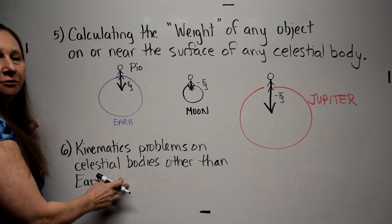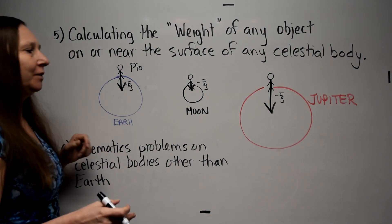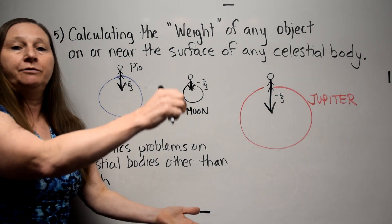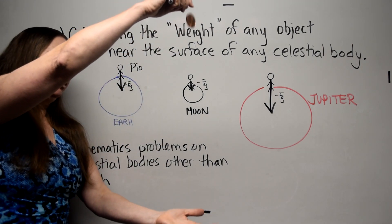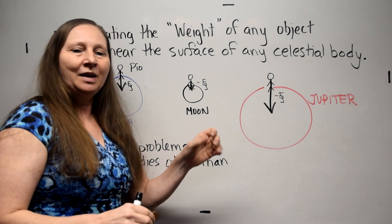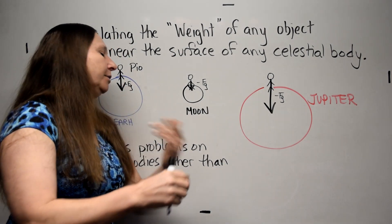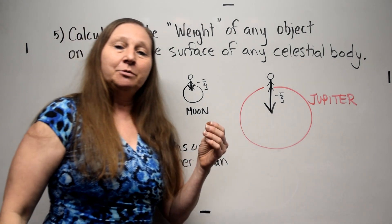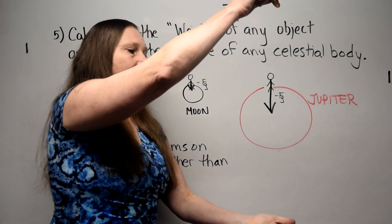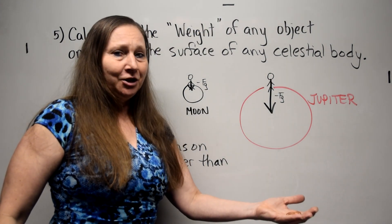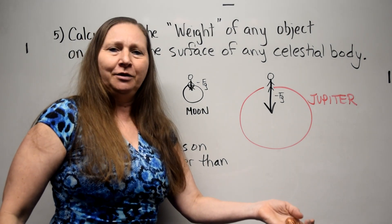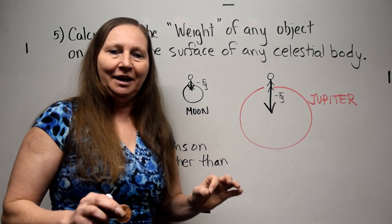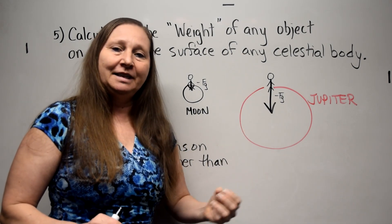The last thing we'll do is a few quick kinematics problems on celestial bodies other than Earth. If Pio were to drop a coin from a height of two meters, on Earth it would take a certain amount of time to hit the ground. Because the Moon has a smaller acceleration due to gravity, the coin would take longer to hit the ground from the same two-meter height. On Jupiter, because of its much larger acceleration due to gravity, that coin would hit the ground much more quickly.